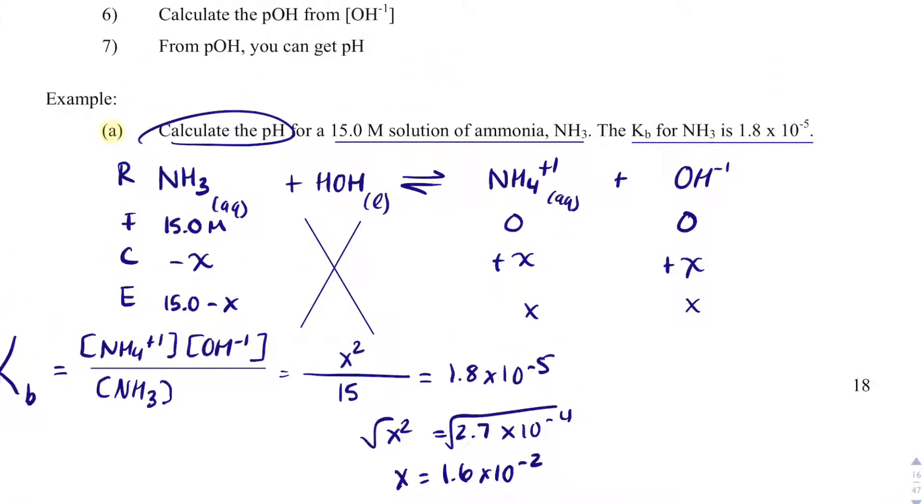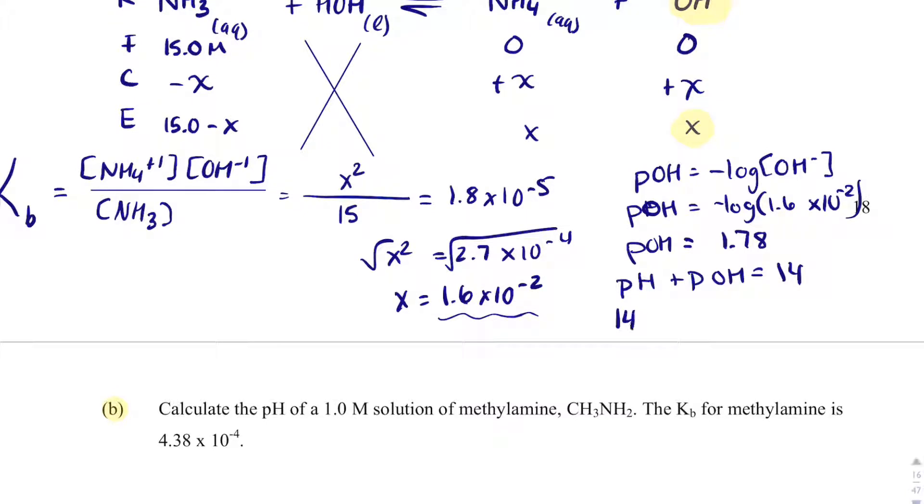Okay. Now, I'm asked to do the pH. So what I'm going to do is I'm going to take the negative log of X. But I'm going to recognize that X represents hydroxide. So really, when I take the negative log of this, that is the pOH. So pOH equals negative log concentration of hydroxide. pOH equals negative log 1.6 times 10 to the minus 2. And my pOH is equal to 1.78. But I need the pH. So I just remember that pH plus pOH equals 14. So if I take 14 minus 1.78, I will get 12.22. And that will be my pH.